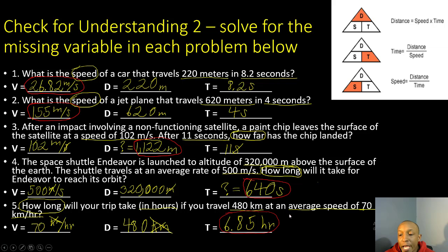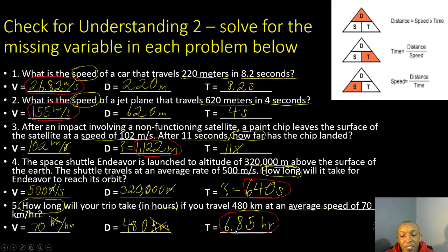Number five: how long will your trip take in hours if you travel 480 kilometers at an average speed of 70 kilometers per hour? We're solving for time. Distance ÷ speed: cross out the kilometers, leaving hours. 480 ÷ 70 = 6.85 hours. Ladies and gentlemen, I hope this tutorial on speed and velocity was helpful. I'm Travis Spivey signing off — peace, and y'all have an awesome, wonderful day.